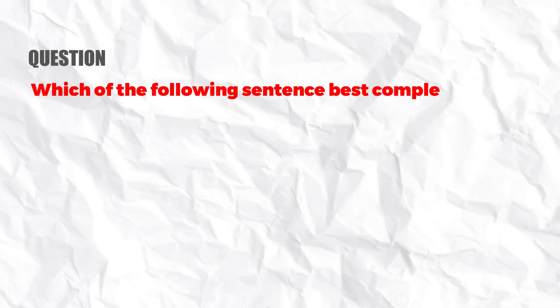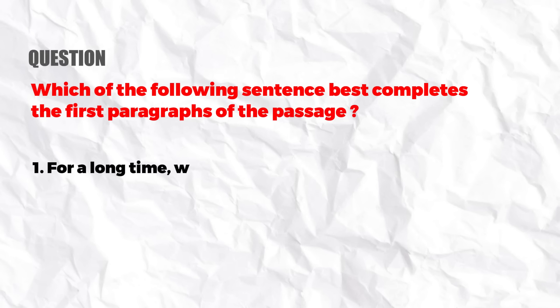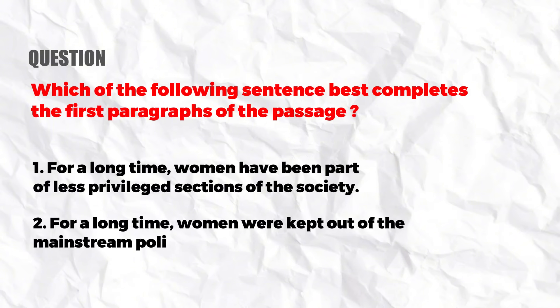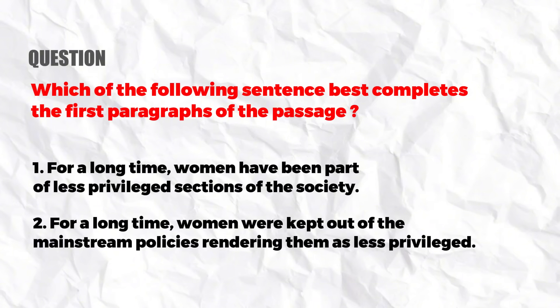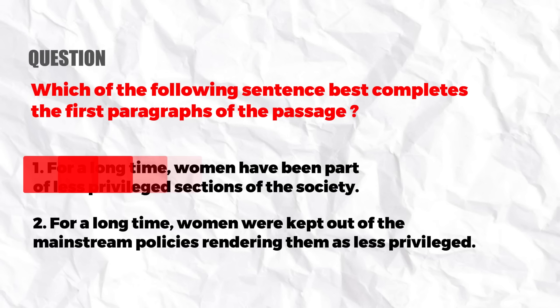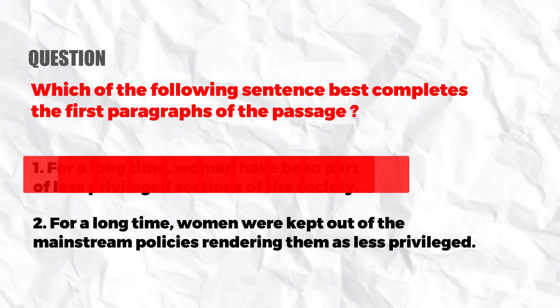One QGP question was: which of the following sentences best completes the first paragraph of the passage? Option one was: 'For a long time, women have been part of less privileged sections of the society.' Option two was: 'For a long time, women were kept out of mainstream policies, rendering them as less privileged.' Both options speak about the same thing and are factually correct. However, the rest of the paragraph's tone was accusational. That's why the second option, which carries an accusational tone, is correct. The first one is informational or factual in tone, while the second is accusational — matching the rest of the paragraph. Only that option can complete the paragraph correctly.